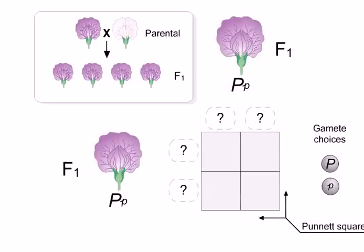Notice that all of these offspring have the same flower phenotype as the purple-flowered plants in the parental generation. In the offspring, called the F1 generation, the white phenotype disappears. If we mate these heterozygous plants to each other, or allow them to self-pollinate, what kinds of offspring would you expect?